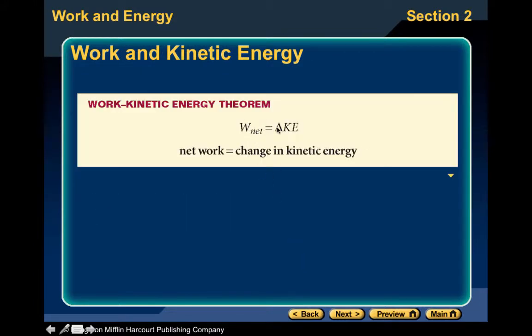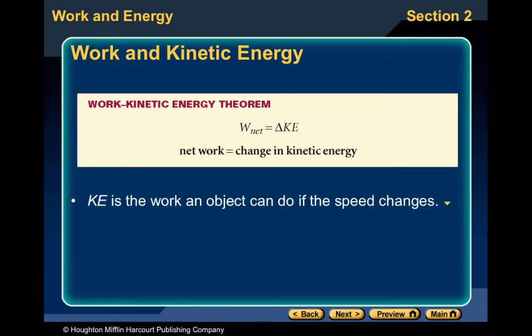Whenever we have final minus initial, that is a change, so we can say the net work is equal to the change in kinetic energy. This is called the work-kinetic energy theorem. Kinetic energy is the work an object can do if the speed changes. W-net is positive if the speed increases; if the speed decreases, then W-net is negative.